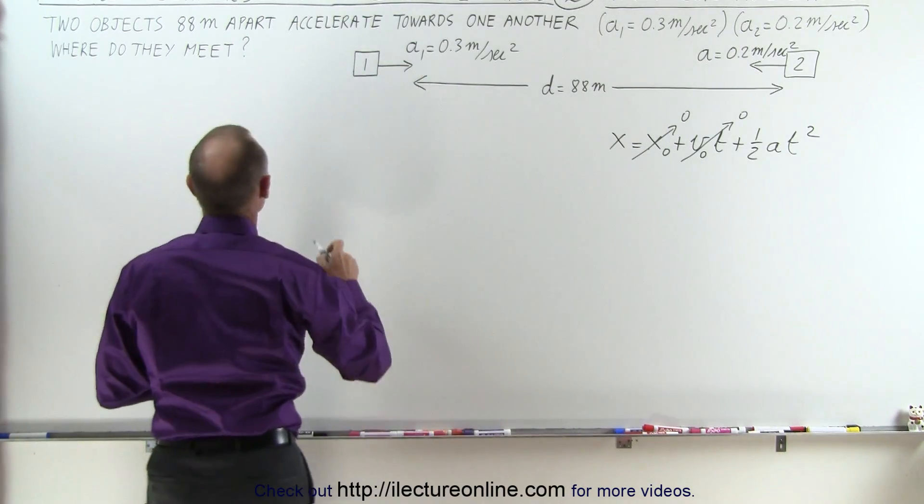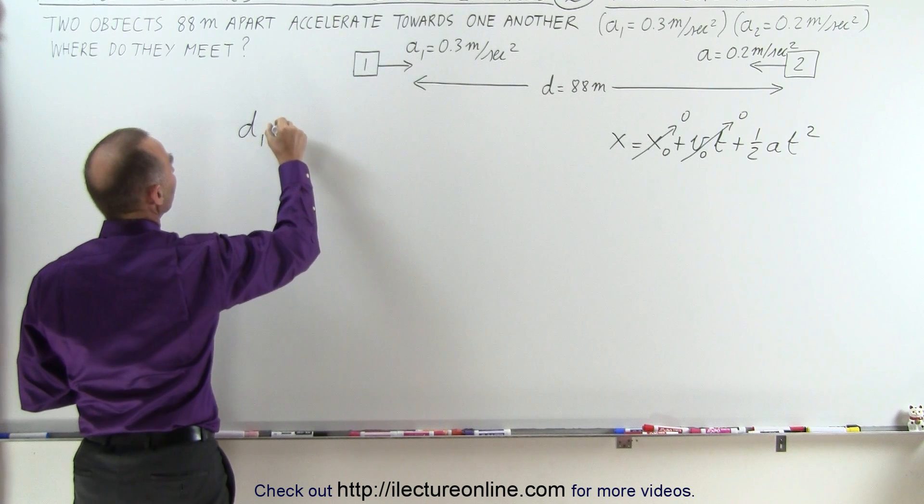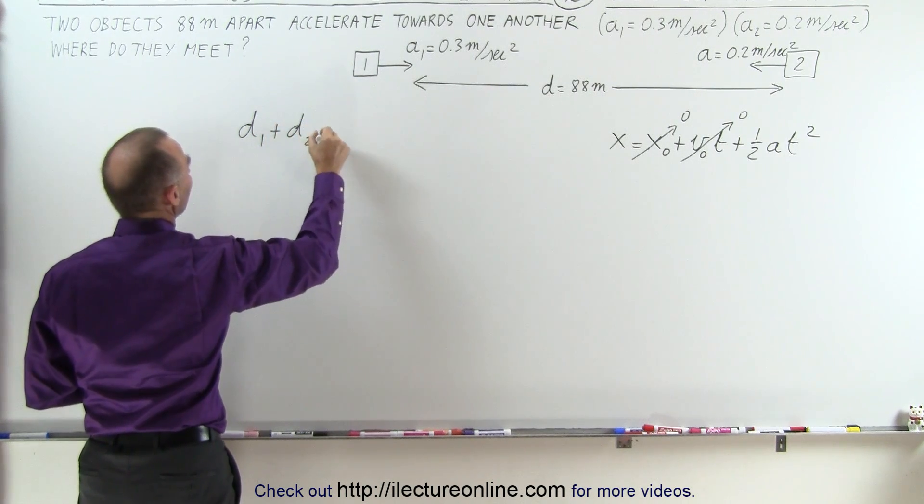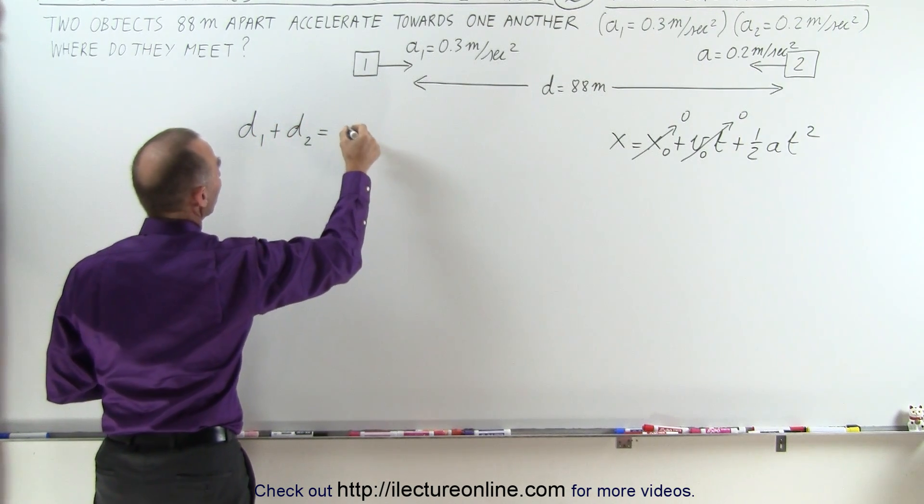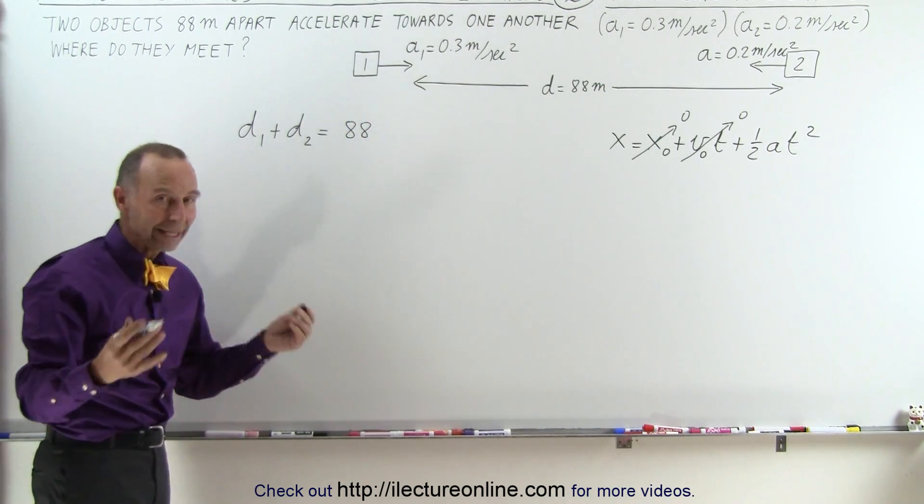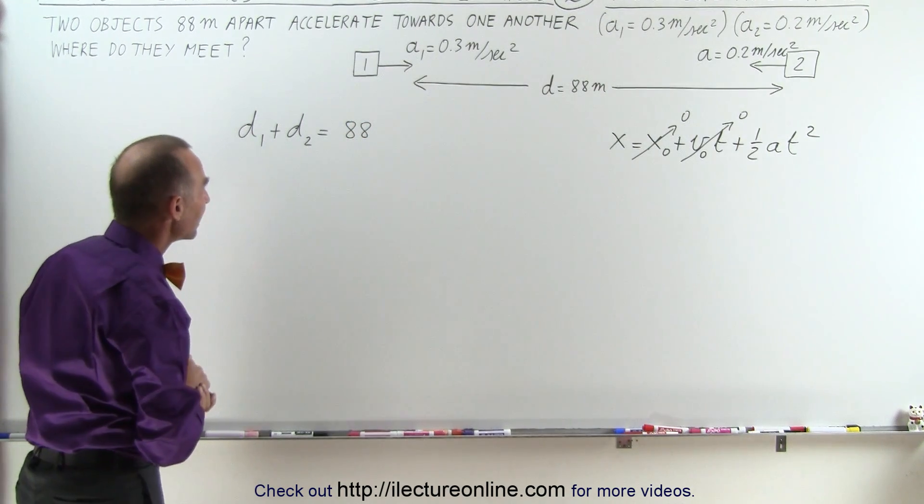So what we can say here is that the distance traveled by the first object plus the distance traveled by the second object will add up to a total of 88 meters, because when they meet they will together have traveled the total distance of 88 meters.